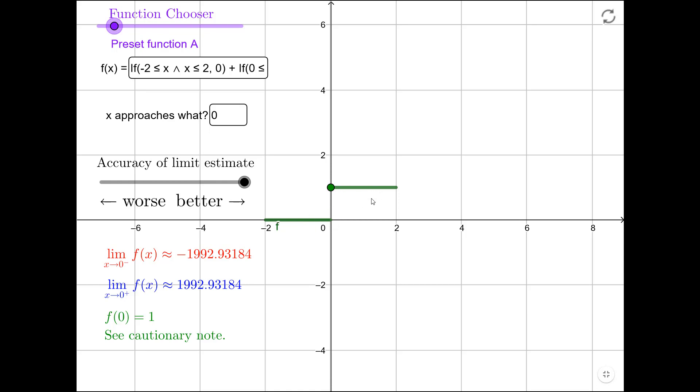It's a simple step function that takes the value 0 from negative 2 to 0. It takes the value 1 from 0 to 2. And when x equals 0, it takes the value 1. So that's indicated by this large dot here.